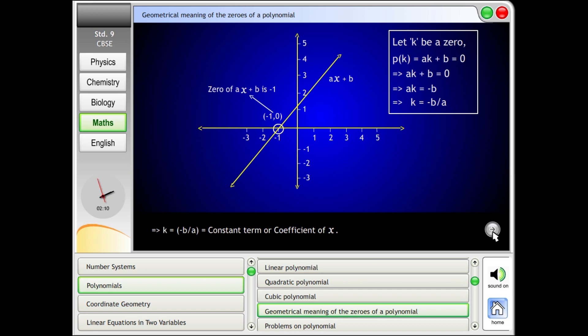k = -b/a = constant term / coefficient of x.